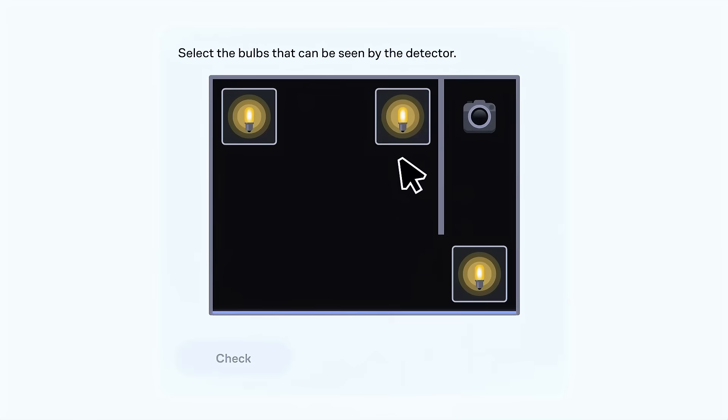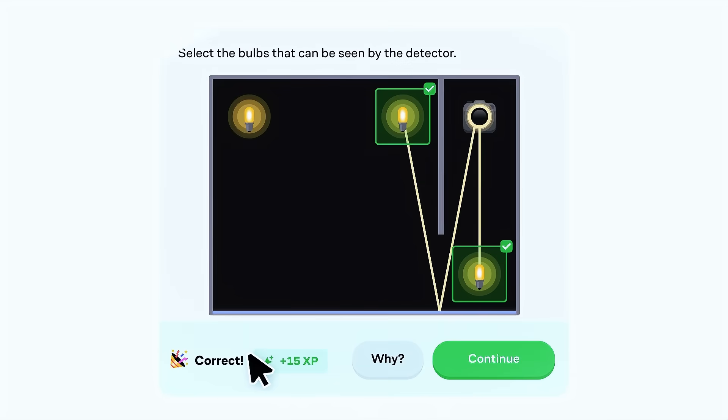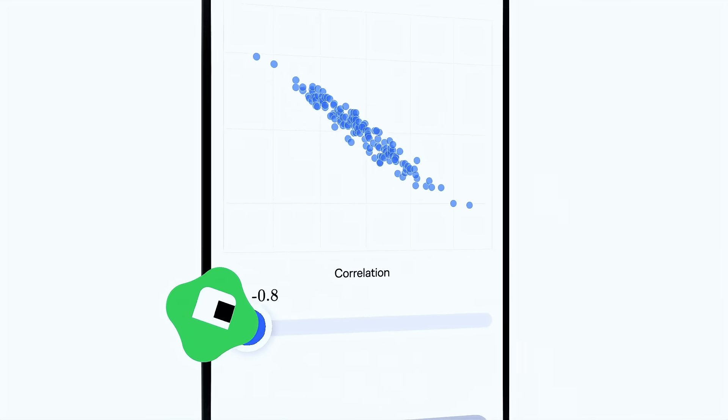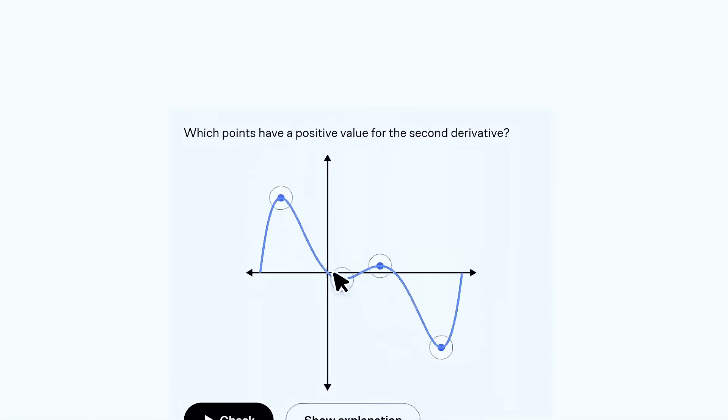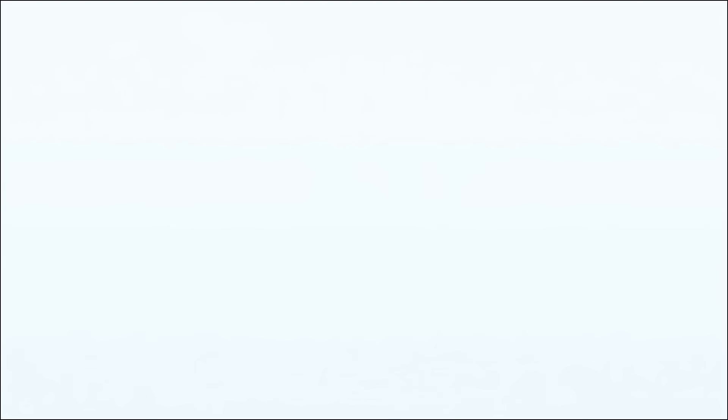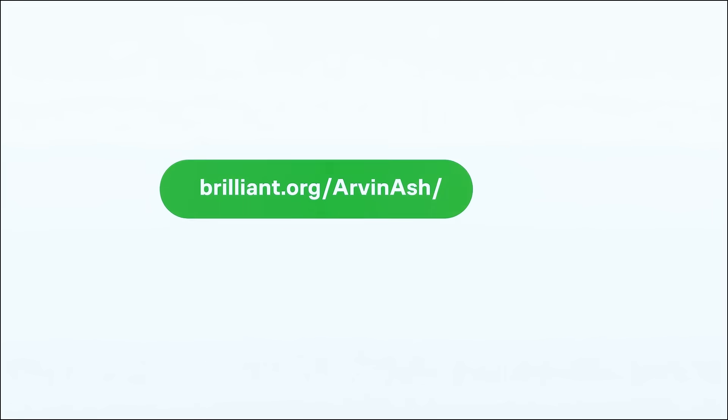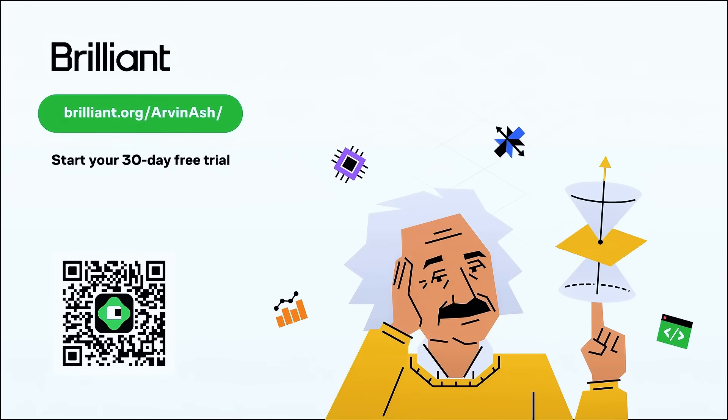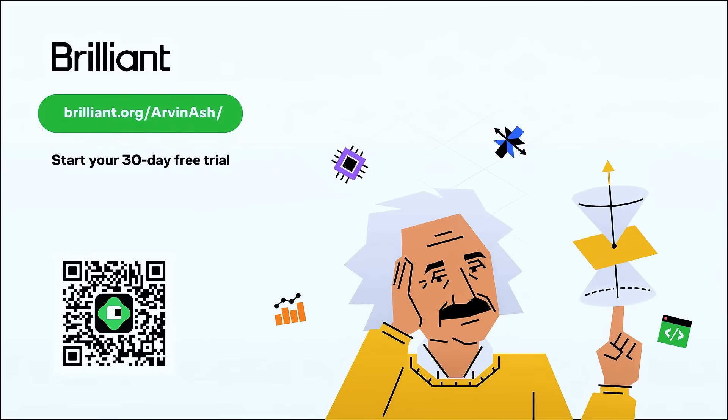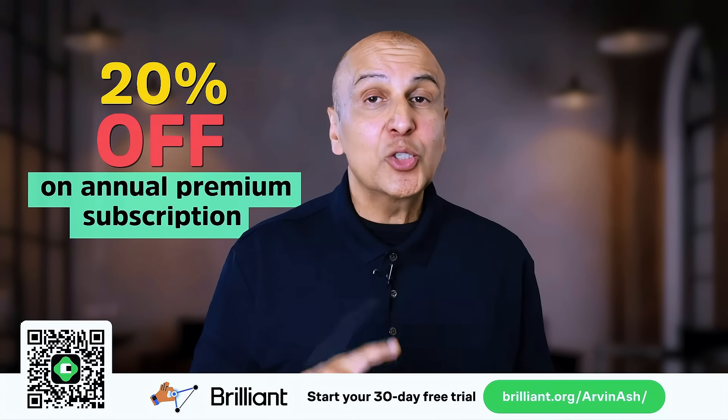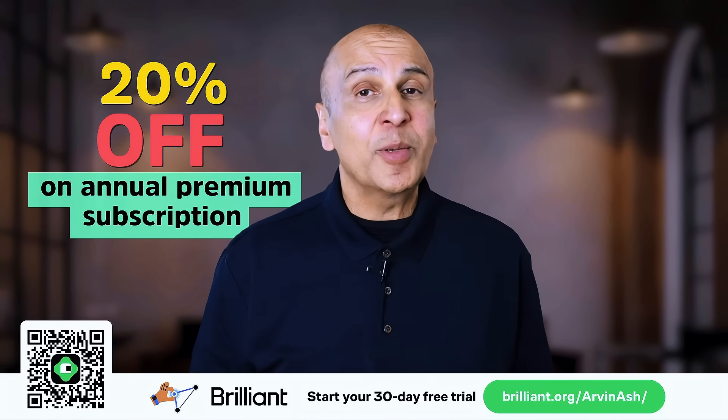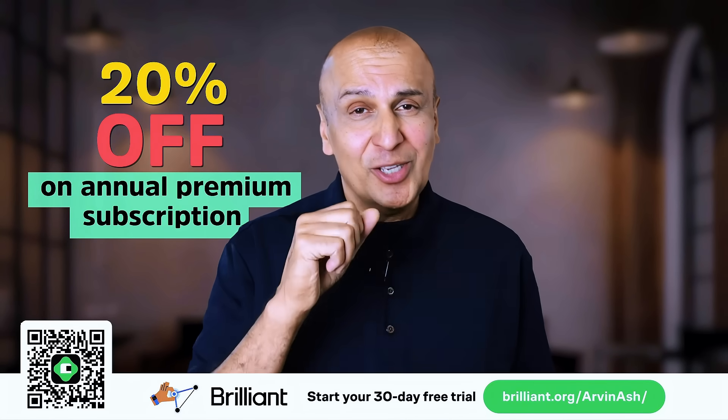But Brilliant will not only help you become a better thinker, but also a problem solver, with thousands of visual interactive lessons in math, science, programming, data analysis, and AI. Fun learning will be at your fingertips, whether at home or on the go. You can try everything Brilliant has to offer for free for a full 30 days by visiting brilliant.org slash arvinash, or scan the QR code on the screen, or just click the link in the description. And if you decide to subscribe, you'll also get 20% off an annual premium subscription. I encourage you to give it a try.